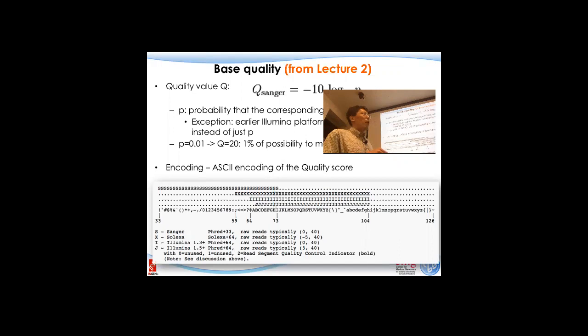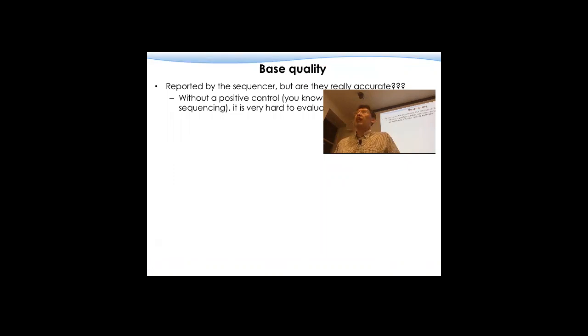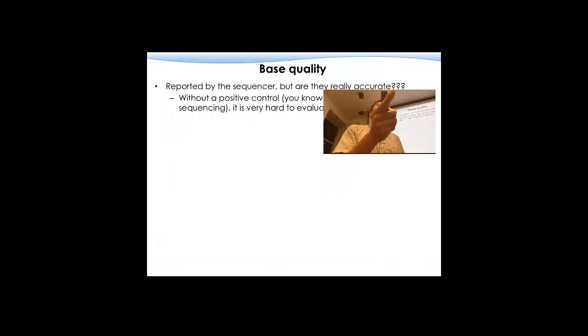We talked about all these different conversions and how to change those letters or ASCII codes back into the symbols, back into the quality values. We talked about there are three levels of quality. The first one is the base quality. It's in your FastQ file and it's being reported by the sequencers. For every single A, C, G, T, the sequencer has the obligation to tell you — if it says this is an A, what is the probability of making a mistake.